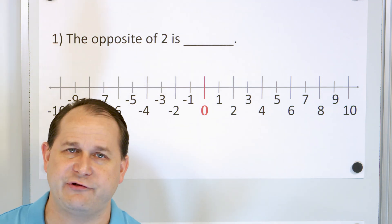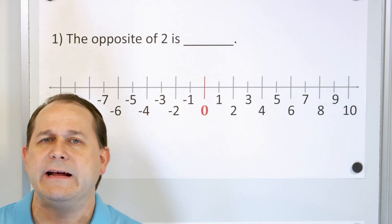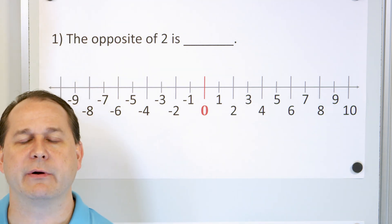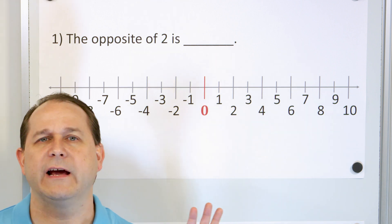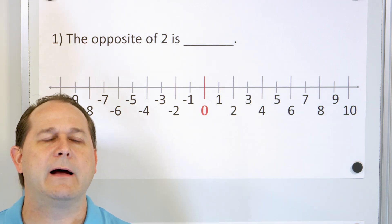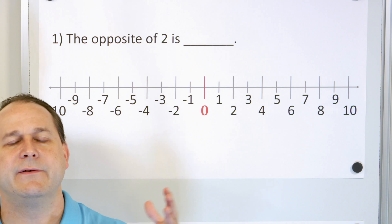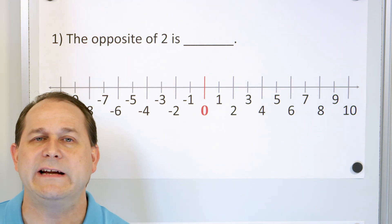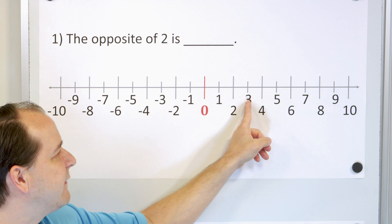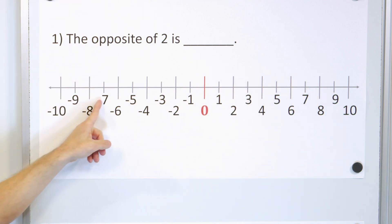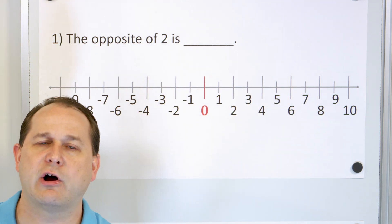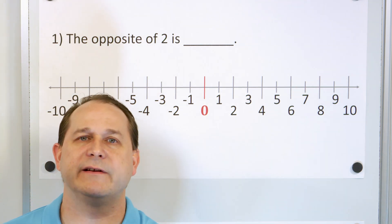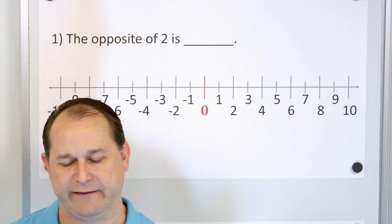So when we use the word integer, all we're saying is an integer is all of the positive and all of the negative numbers, but just the whole number. We're not talking about decimals — we're just talking about positive five, negative five, positive ten, negative ten, and so on. That's what an integer is. Any whole number that's positive and also its partner negative number — those are called the set of numbers we call integers. Whole numbers that happen to be positive or negative. That's what an integer basically is.